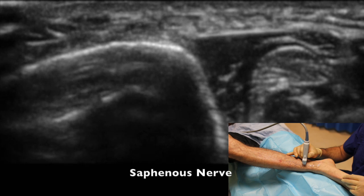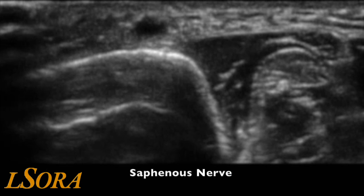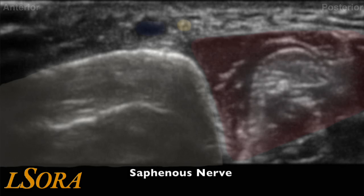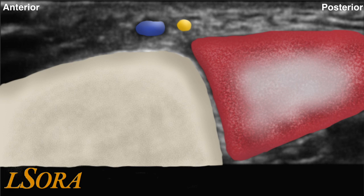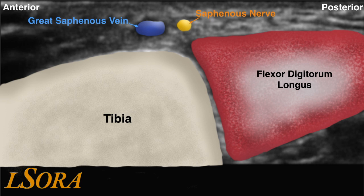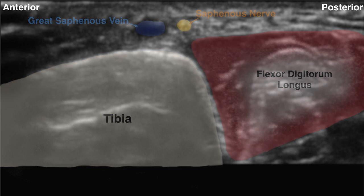To scan for the saphenous nerve, the probe is slid anteriorly over the tibia. The tibia or medial malleolus is identified, as is flexor digitorum longus. The great saphenous vein is seen lying extremely superficially under the skin and subcutaneous tissue. The saphenous nerve lies in close proximity to it.